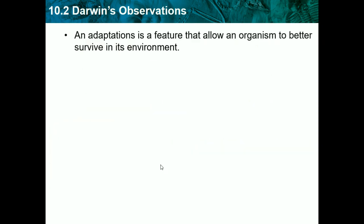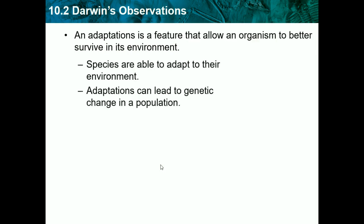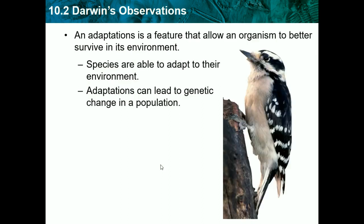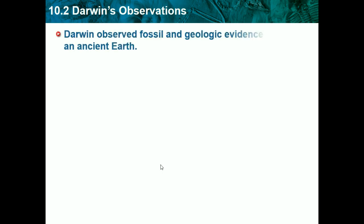An adaptation is a feature that allows an organism to better survive in its environment. Species acquire adaptations over time, and it helps them fit better in that environment and thrive. Adaptation can lead to genetic change in a population. So since the nuts became hard in the area the finches live in, only the finches with hard beaks were able to get the food, so eventually they passed on their genes for having hard beaks, and it eventually spread throughout the population.